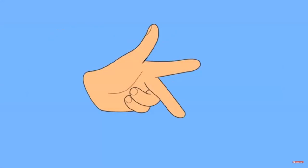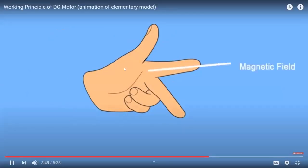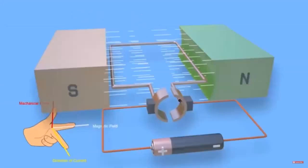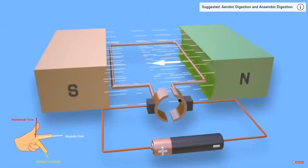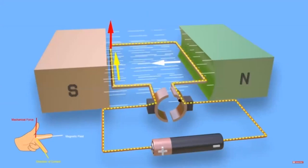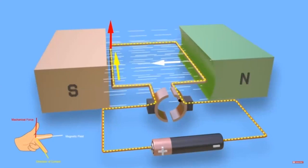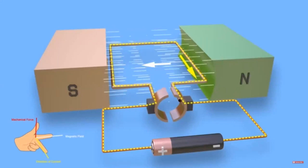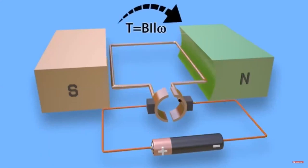To apply Fleming's left-hand rule, spread out your left thumb, forefinger, and second finger so they are all at 90 degrees to one another. If the forefinger is aligned in the direction of the magnetic field — from north pole to south pole — and the second finger is aligned in the direction of current in the conductor, then the thumb indicates the direction of mechanical force, which is clearly downward for the left conductor and upward for the right conductor.